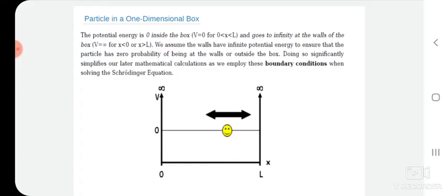How do we solve this problem using Schrödinger's wave equation? We must follow our recipe for quantum mechanics. First, we define the potential energy V. Second, we solve Schrödinger's equation for the particle in a one dimensional box. Third, we solve the wave function associated with that particle. And lastly, we find the allowed energy levels of that particle.